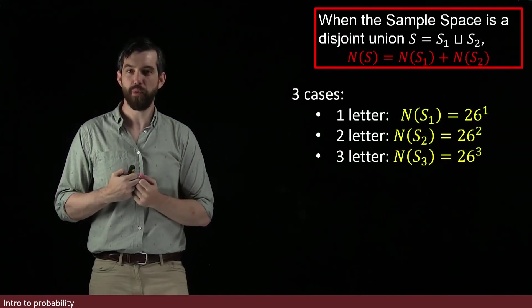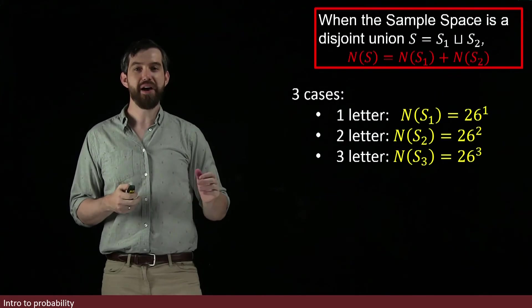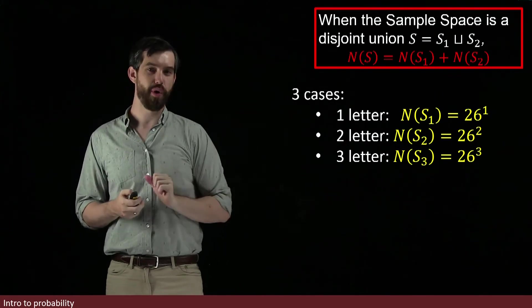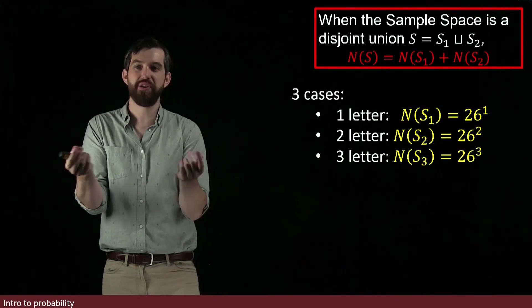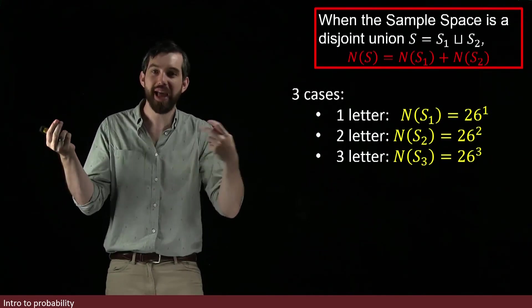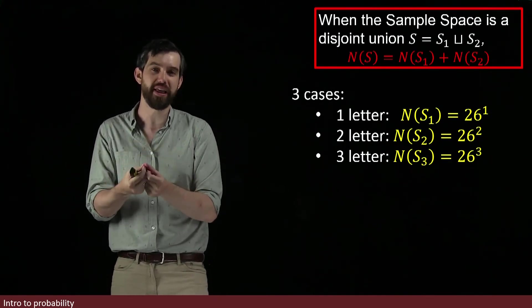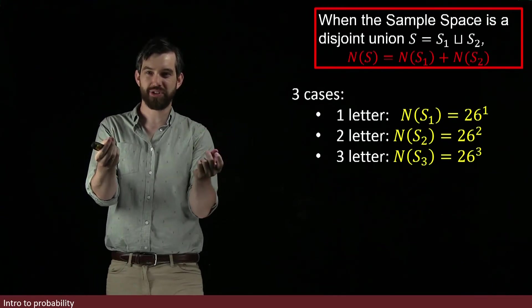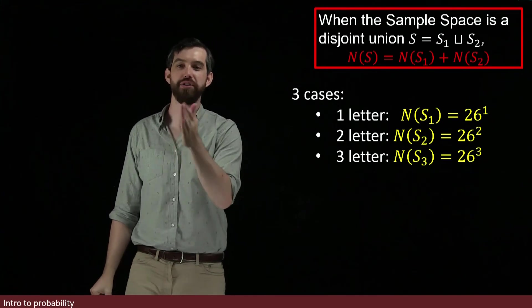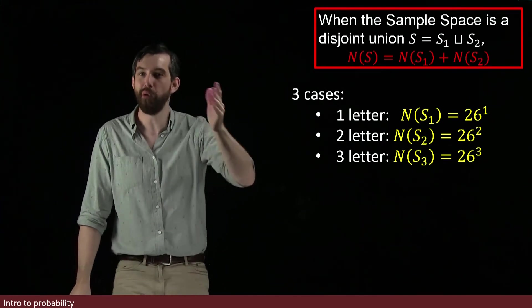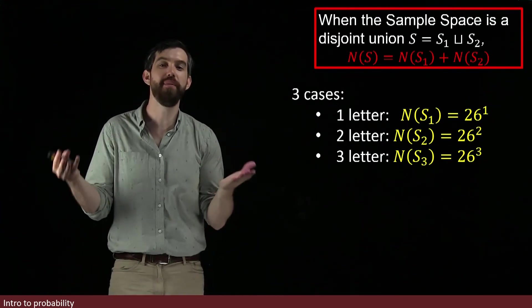So in the example that we had seen, we actually have a triple disjoint union. There's no overlaps. The S1 and the S2, their intersection is empty. And the S1 and the S3, their intersection is empty. And finally, the S2 and the S3, their intersection is empty. Every one of these passwords is either 1, 2, or 3, and there's none that are both 1 and 2 letters long. It wouldn't make any sense.